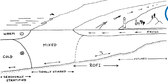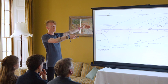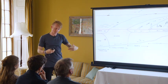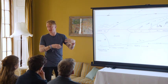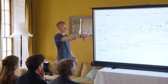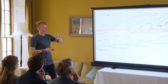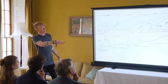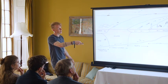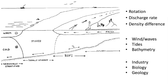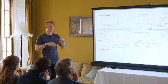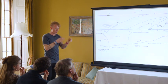You ask yourself: what else might affect where this river water goes? There's the Earth's rotation, discharge rate — if there's been a lot of rain, there's more water leaving the river. There's the density difference, since the ocean has roughly constant salinity but your river can vary. And then there are other things: wind and waves, tides, bathymetry — the shape of the river bed — and even human impacts like industry or a big dock or harbour along the coast. You can make this problem really, really complicated, because it is really complicated.